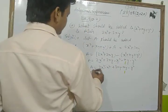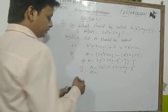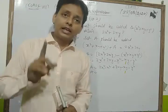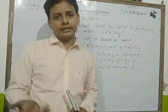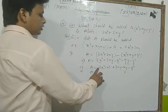Now we collect the like terms and subtract. We subtract the like terms from each other. For x²: 2x² minus x² gives x². For xy: 3xy minus xy gives 2xy.